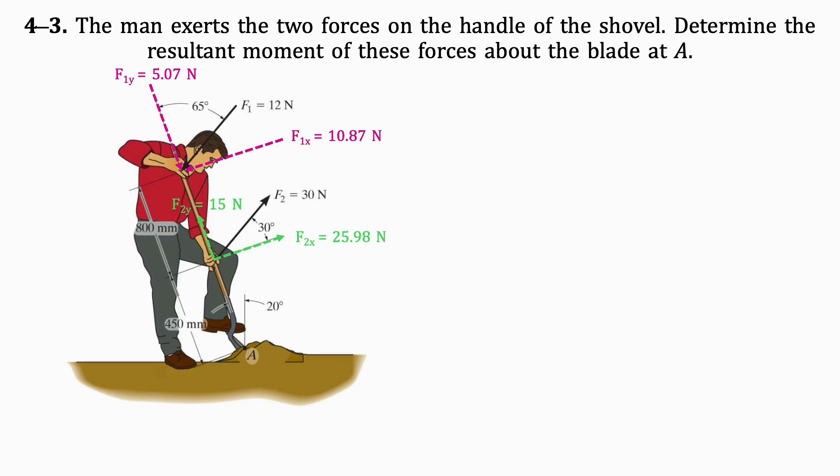To get the resultant moment about point A, we will add the moments of force 1 about A and force 2 about A. When finding these moments, we will only consider the X components of both F1 and F2, as the line of action of their Y components pass through the point A and therefore will not generate a moment.